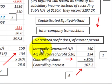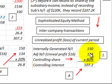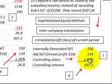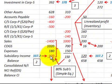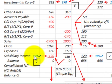Looking at the sophisticated equity method calculation: the subsidiary has internally generated net income of $150,000, which is then adjusted down to $134,000. The parent gets 80% of this adjusted net income, resulting in a controlling interest of $107,200. This income distribution schedule must be prepared first before we go to the worksheet.